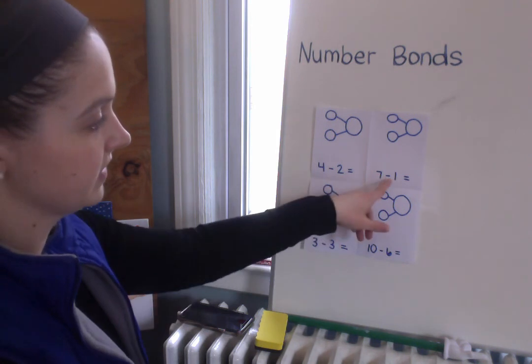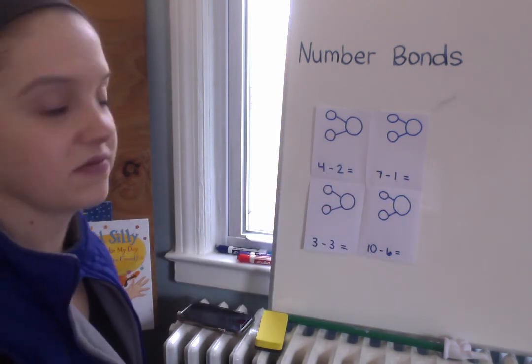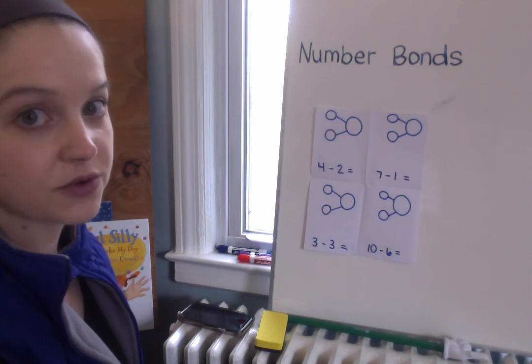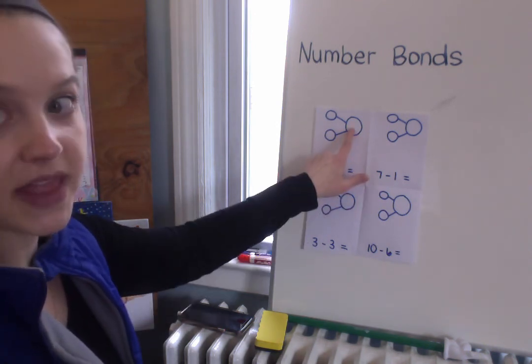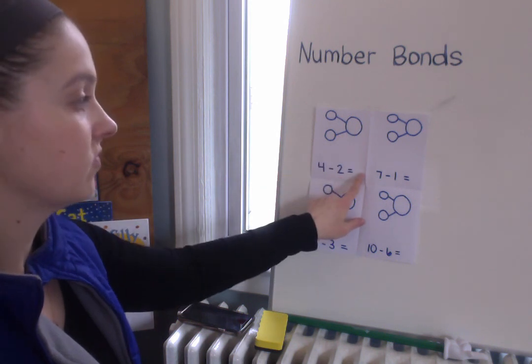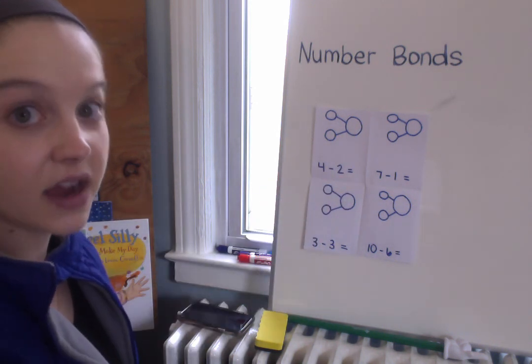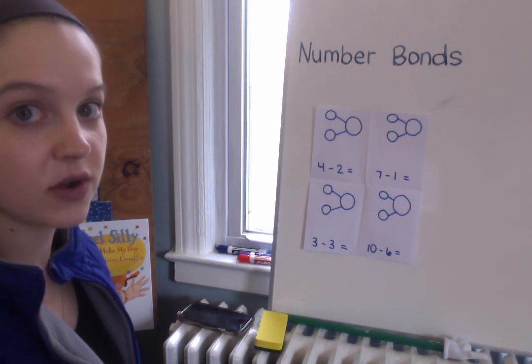After you've gotten the problems down now your job is to go back and fill in your number bonds. Remember because this is subtraction, our first number is gonna go in that big circle. You're gonna have to solve each one of these for the answer to find out the other number that goes in the small circle.